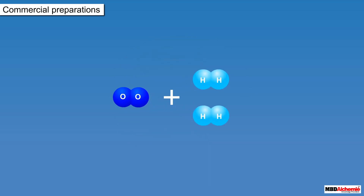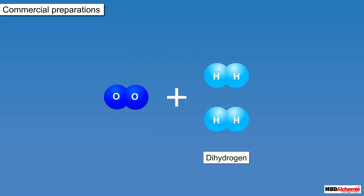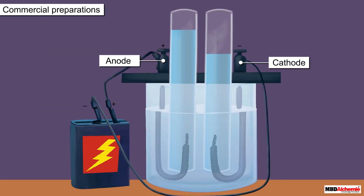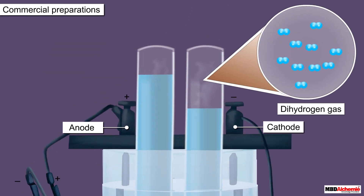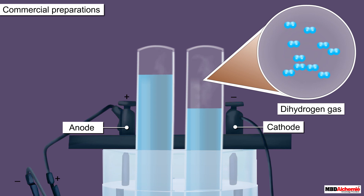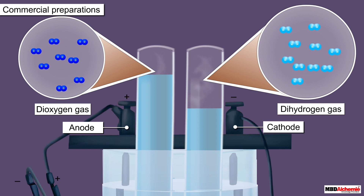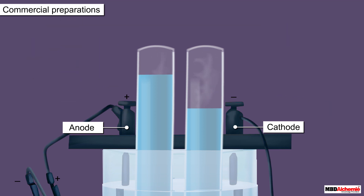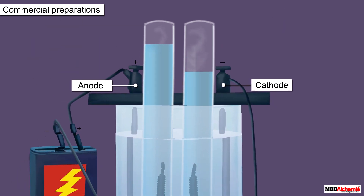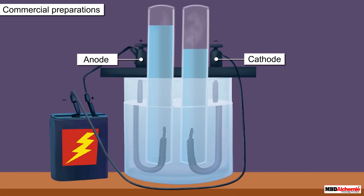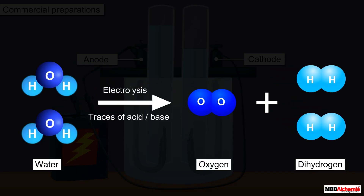As a result, water gets separated into dihydrogen and dioxygen. The dihydrogen gas gets collected at the cathode while the dioxygen gas gets collected at the anode. The overall chemical reaction that takes place during the electrolysis of water is represented as shown here.